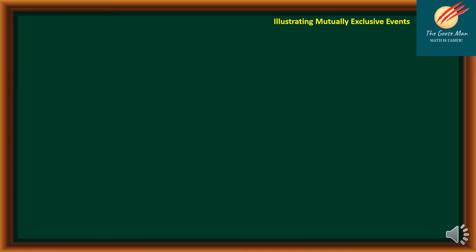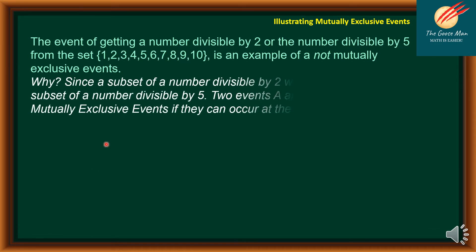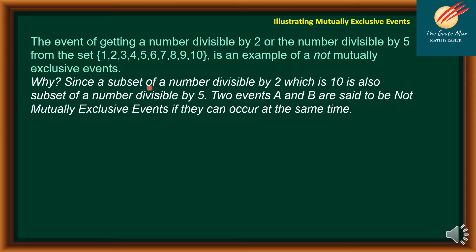For a better understanding, consider this example: the event of getting a number divisible by 2 or divisible by 5 from the set {1, 2, 3, 4, 5, 6, 7, 8, 9, 10} is an example of NOT mutually exclusive events. This is because the number 10 is a subset of both — divisible by 2 and also divisible by 5. Two events A and B are not mutually exclusive if they can occur at the same time.